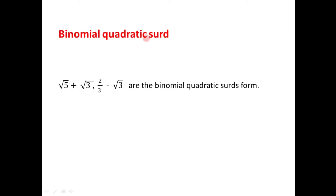Another example is 2/3 − √3. In this case, only one surd is present — that is the second term, √3. The first number, 2/3, is a rational number. So if out of two terms only one is a surd, it is still called a binomial quadratic surd. That is why 2/3 − √3 is also a binomial quadratic surd.